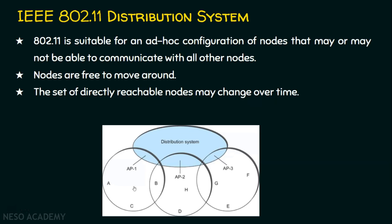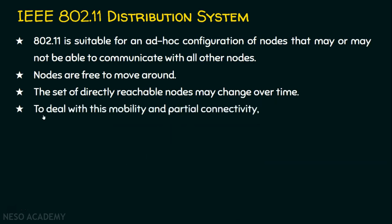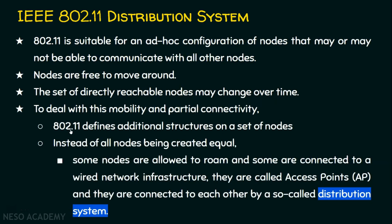The set of directly reachable nodes may change over time. For example, A and C are directly reachable through access point 1, but when A moves to access point 3, A and C can no longer directly access each other. Node B may be in the coverage range of both access point 1 and access point 2, so we need to handle which access point it will choose. To deal with mobility and partial connectivity, IEEE 802.11 defines additional structures: some nodes are allowed to roam and some are connected to the wired network infrastructure - they are called access points, connected to each other by a distribution system.